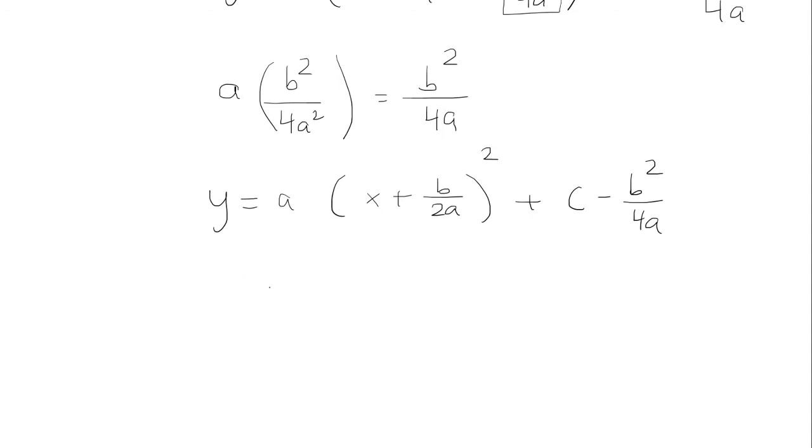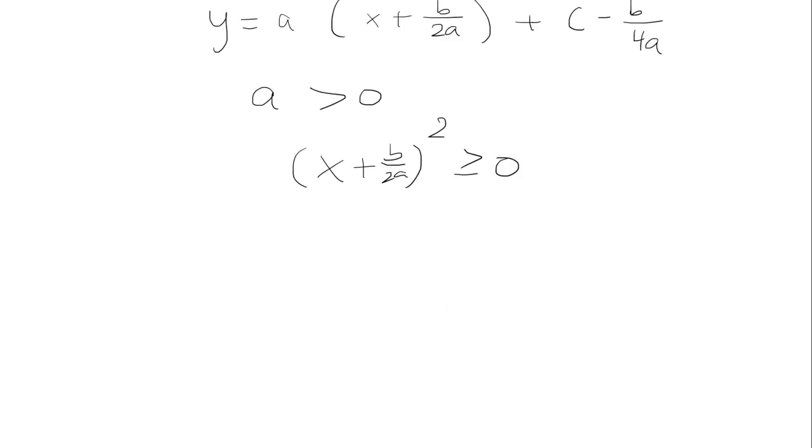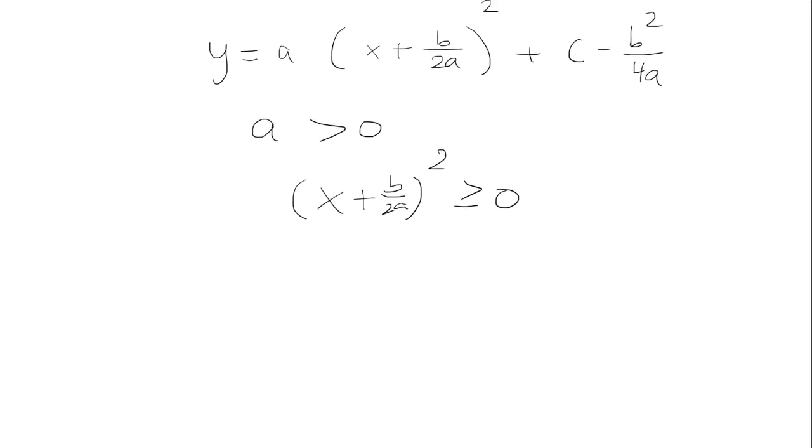We want to show that the max or the minimum occurs at opposite b over 2a. So let's say if a is greater than 0. Well, let's start off with x plus b over 2a quantity squared. We know that's obviously going to be greater than or equal to 0, because anything squared is greater than or equal to 0.